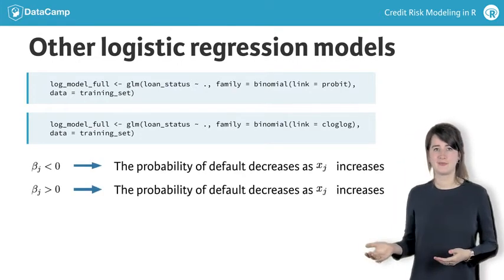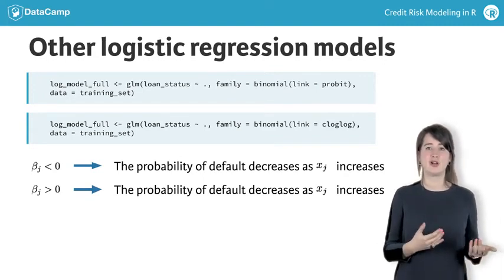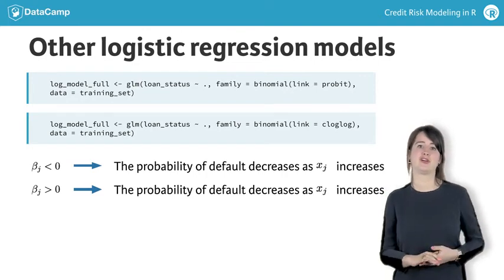As shown here, negative parameter estimates for these models also lead to a decrease in default probability, and positive parameter estimates to an increase in default probability.